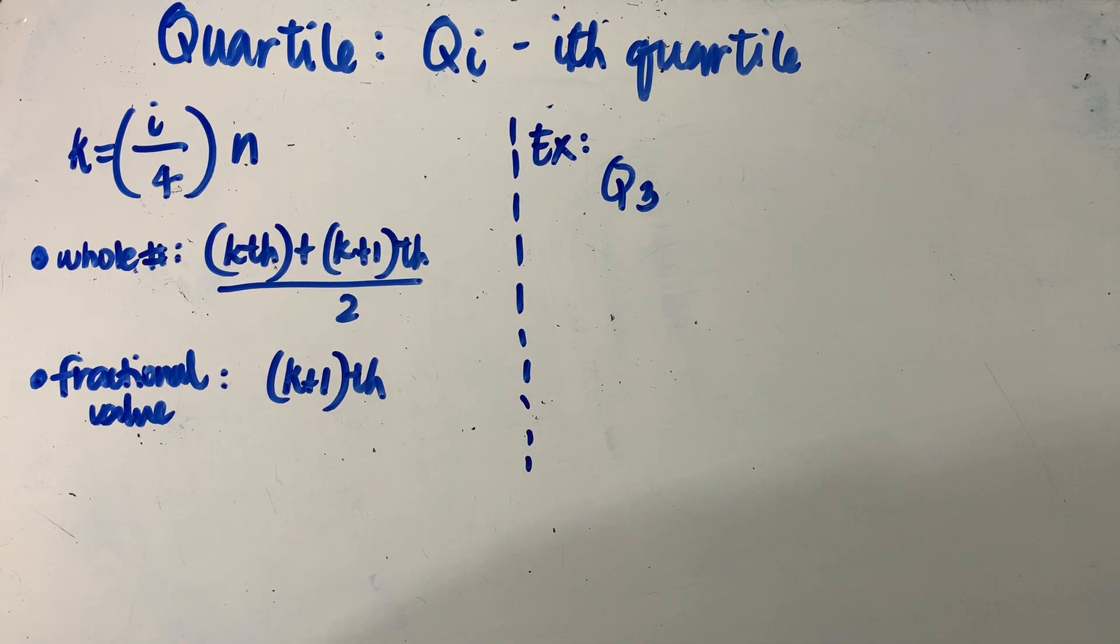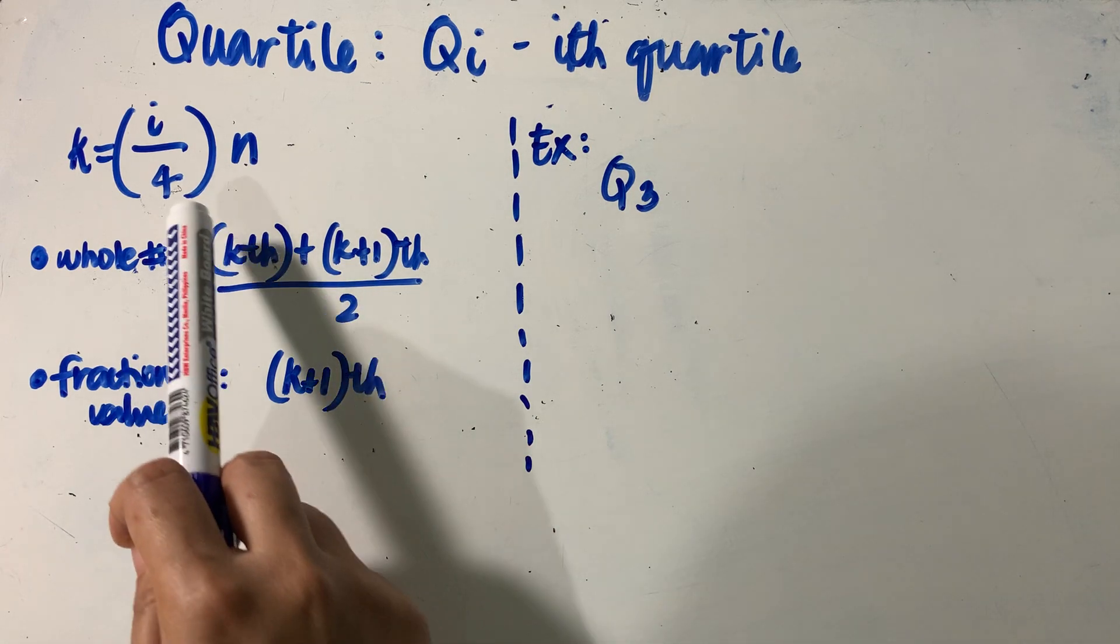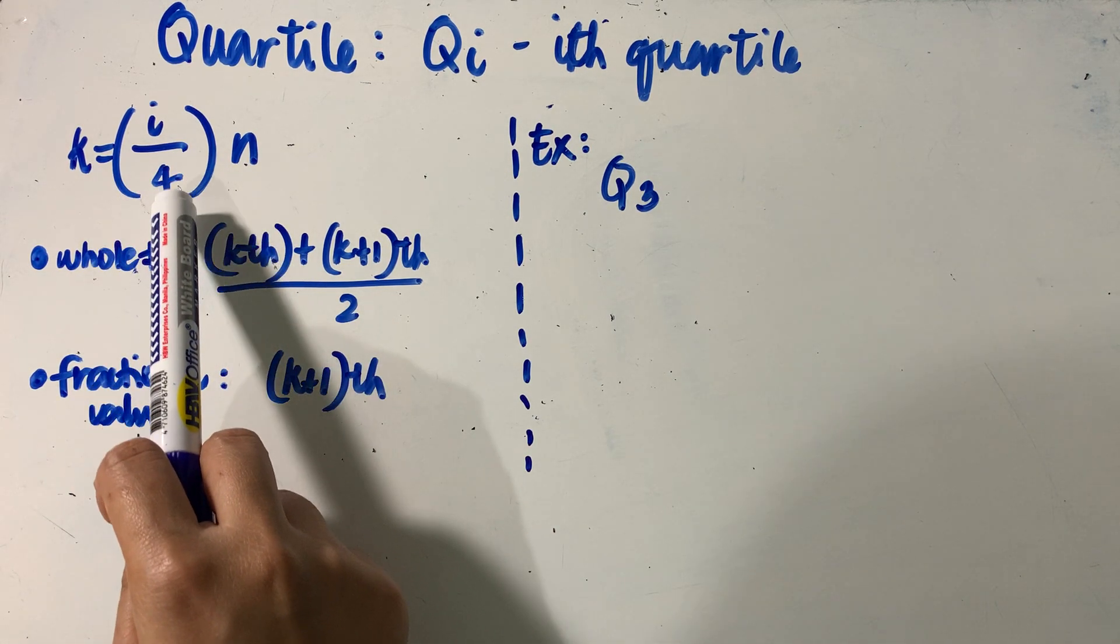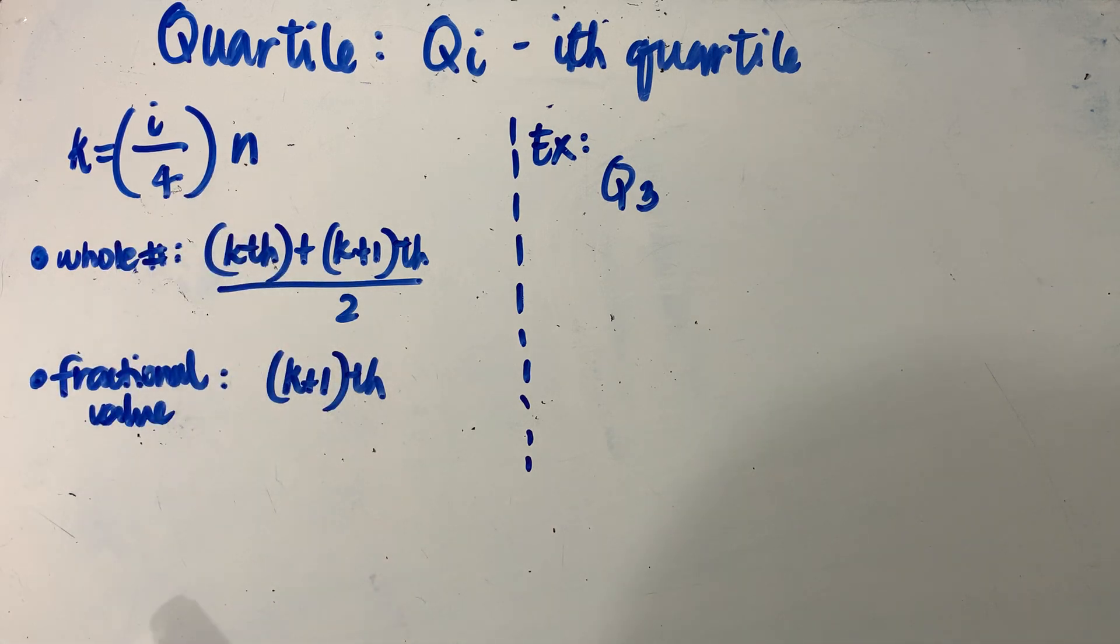Our next topic would be what we refer to as quartile. When we say quartile, your distribution is divided into four equal parts. Thus, the denominator that we now have for the formula for the value of k is equal to four.